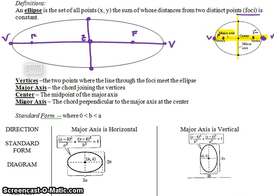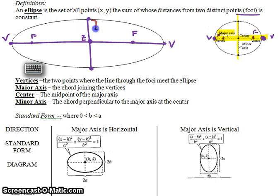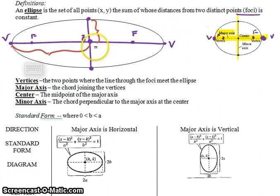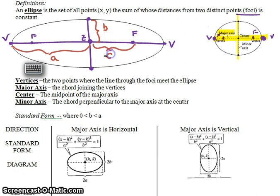I'm going to label a couple more things on the axes. We have the distance from the center to the endpoint of the minor axis, from the center to the endpoint of the major axis, and the distance from the center to the foci. These three distances are called A, B, and C specifically. A is the distance from the center to the vertex, B is the center to the endpoint of the minor axis, and C is the distance from the center to the foci.